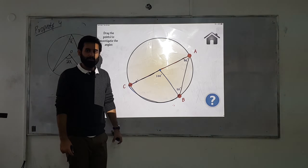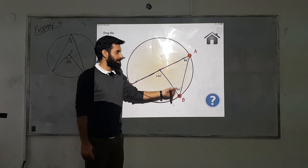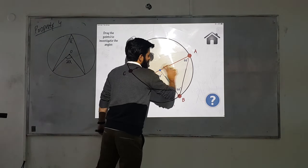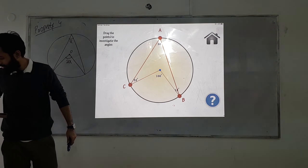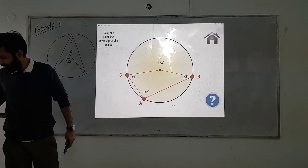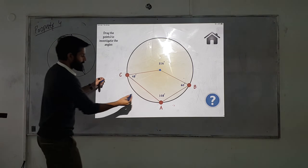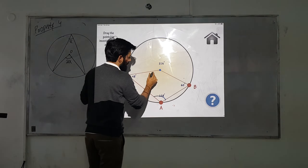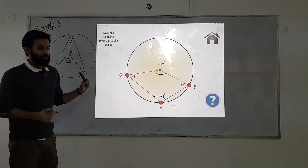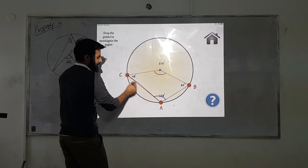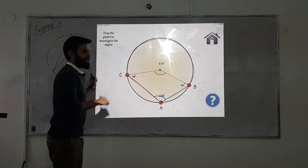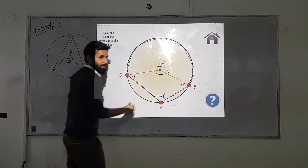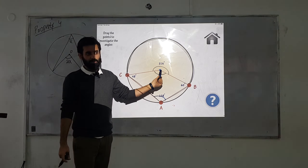Now this angle is 108 degrees. The confusion is that if it's 108 then the center angle would just be double, but that's incorrect. Why? Because angle A is making a particular arc, and the center angle is making the same arc. So if this angle is 108, the center angle would be 216.